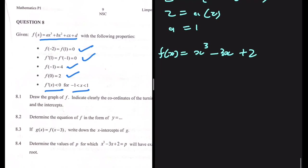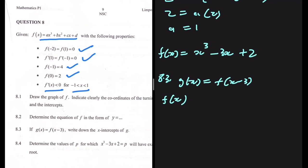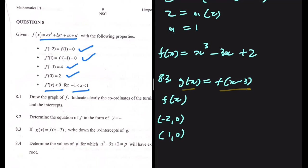Question 8.3: if g(x) = f(x - 3), write down the x-intercepts of g. Before we break down the transformation, let's write down the x-intercepts of f(x) first: x = -2 and x = 1. Now, x - 3 shifts the graph of f(x) three units to the right — if it were plus, it would shift left. It's counterintuitive, but that's how it works. So we move each x-value 3 units to the right.